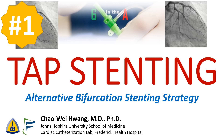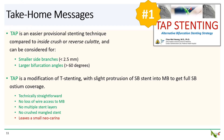And the number one most popular video on this channel in 2021: TAP stenting — an alternative bifurcation stenting strategy. Take-home messages. TAP is a fairly easy provisional stenting technique, at least compared to inside crush or reverse culotte, and can be considered for bifurcations with smaller side branches less than two and a half millimeters and larger bifurcation angles greater than 60 degrees. TAP is a modification of T stenting, with slight protrusion of the side branch stent into the main branch to get full side branch ostium coverage. TAP maintains wire access to the main branch throughout and does not leave behind multiple stent layers or crushed mangled stent layers. However, there is a small neocarina, but that can be minimized for the right bifurcation geometry.